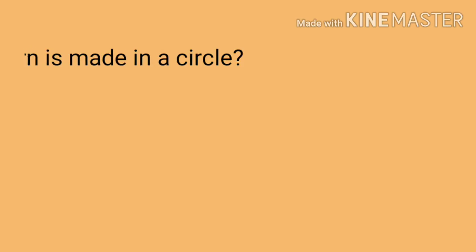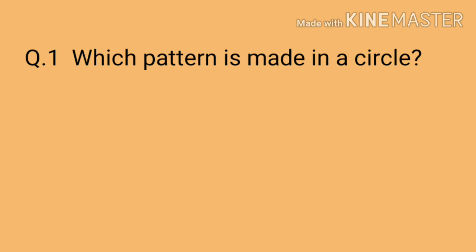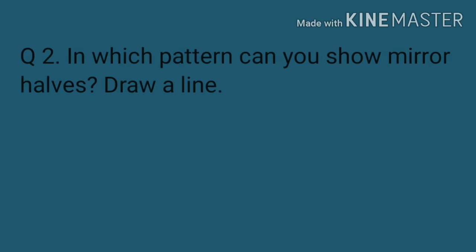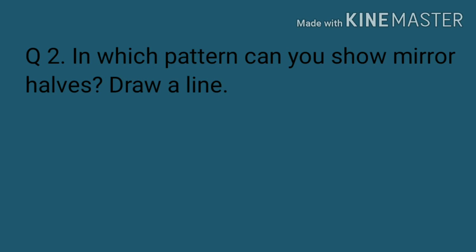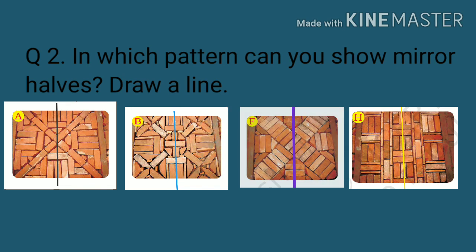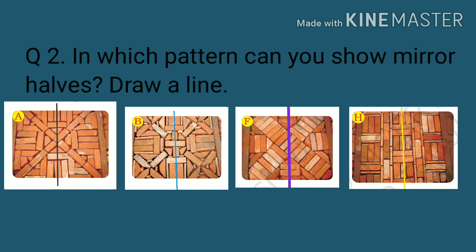Here are a few questions for you, students. Question 1: Which pattern is made in a circle? The answer is J. Pattern J is made in a circle — you can see this figure, it's looking like a circle. Next question: In which pattern can you show mirror halves? Draw a line. You can see figure A, figure B, figure F, and figure H.